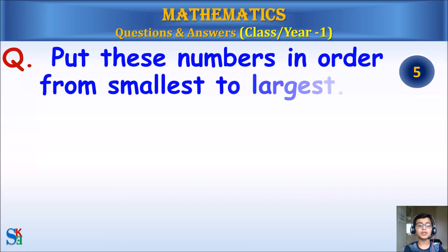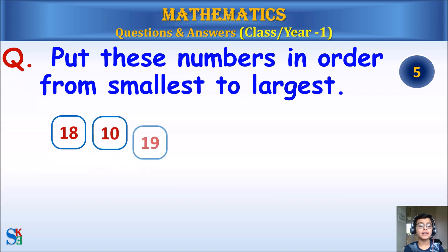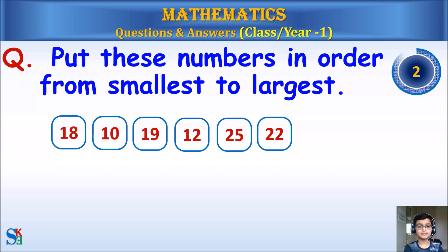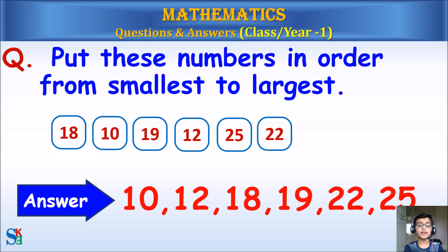Put these numbers in order from smallest to largest: 18, 10, 19, 12, 25, and 22. Answer: 10, 12, 18, 19, 22, 25.